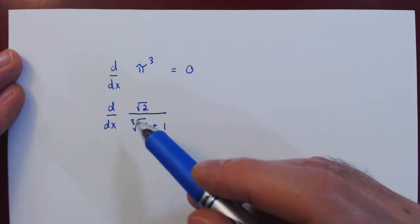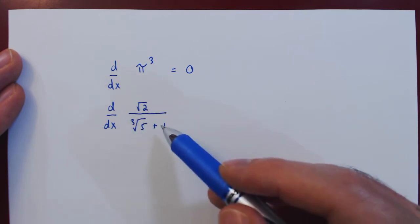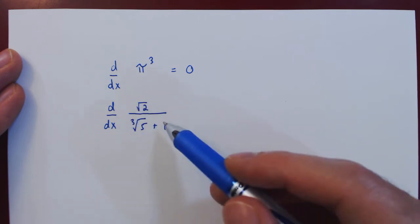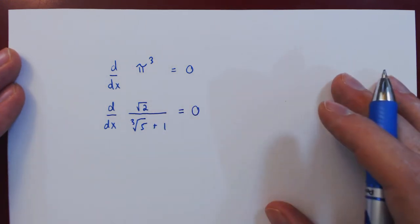Root of 2 is a constant, cube root of 5 is a constant, plus 1 is a constant. The whole thing is just one big constant, and so again, the derivative of a constant is equal to 0.